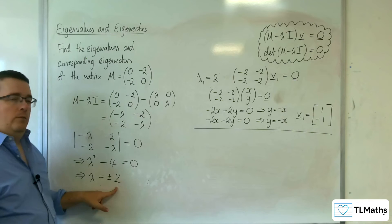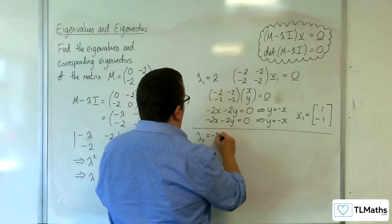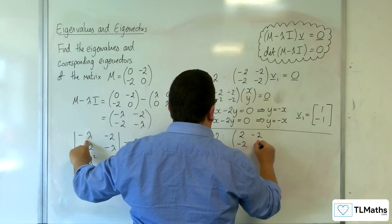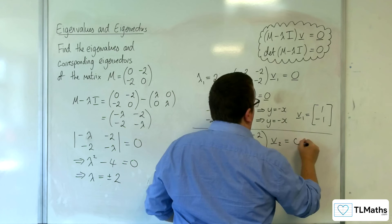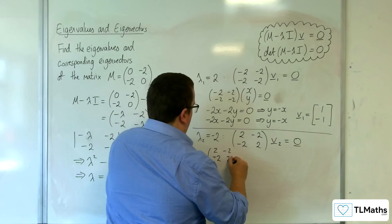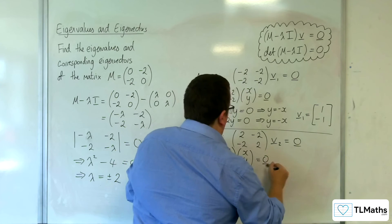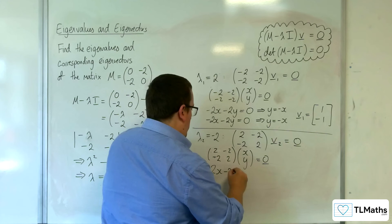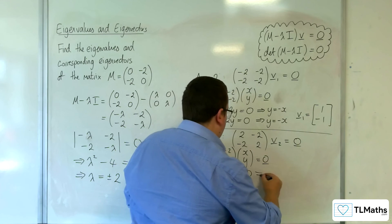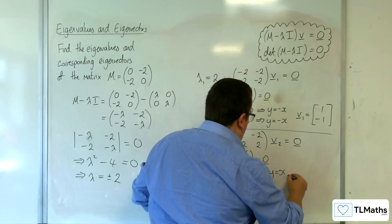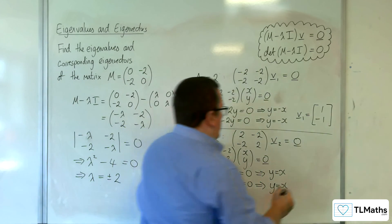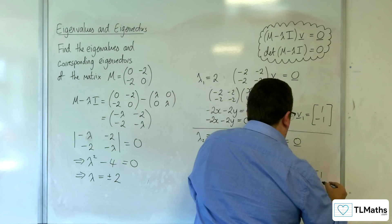The second eigenvalue is lambda 2 equal to minus 2. Substituting lambda = −2 gives the matrix (2, −2, −2, 2) multiplying v2, equal to the zero vector. Using (x, y), we get 2x − 2y = 0 and −2x + 2y = 0. Rearranging both equations gives y = x. So when x = 1, y = 1, giving eigenvector v2 = (1, 1).